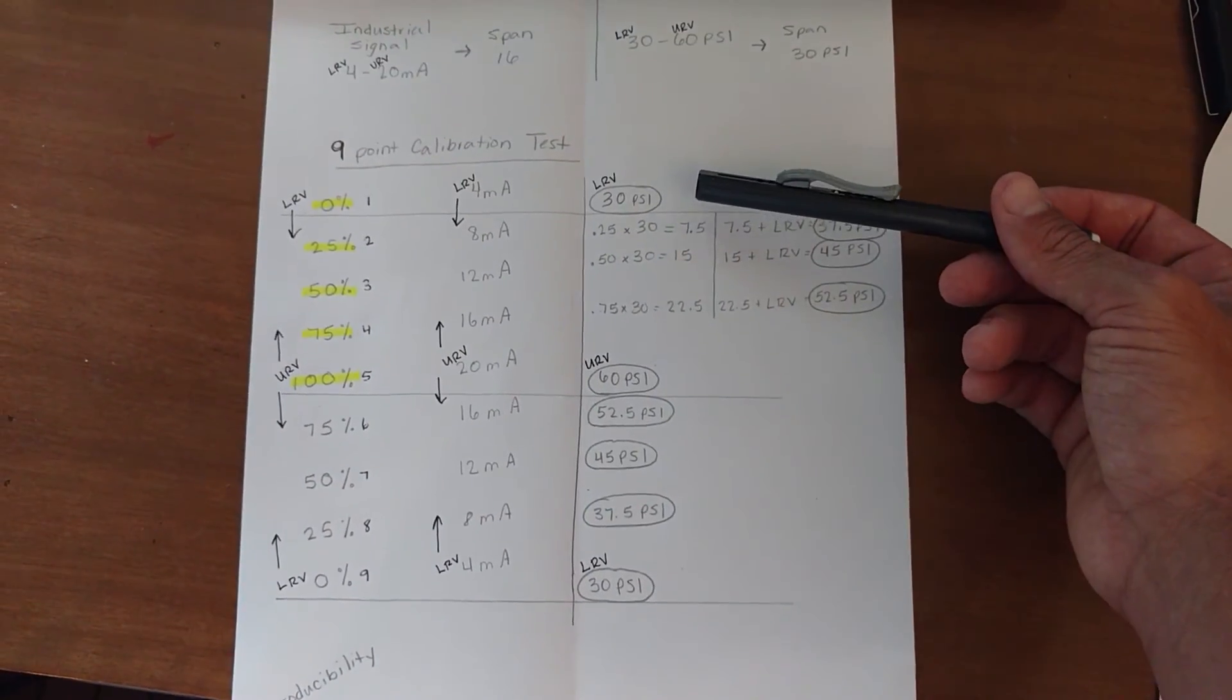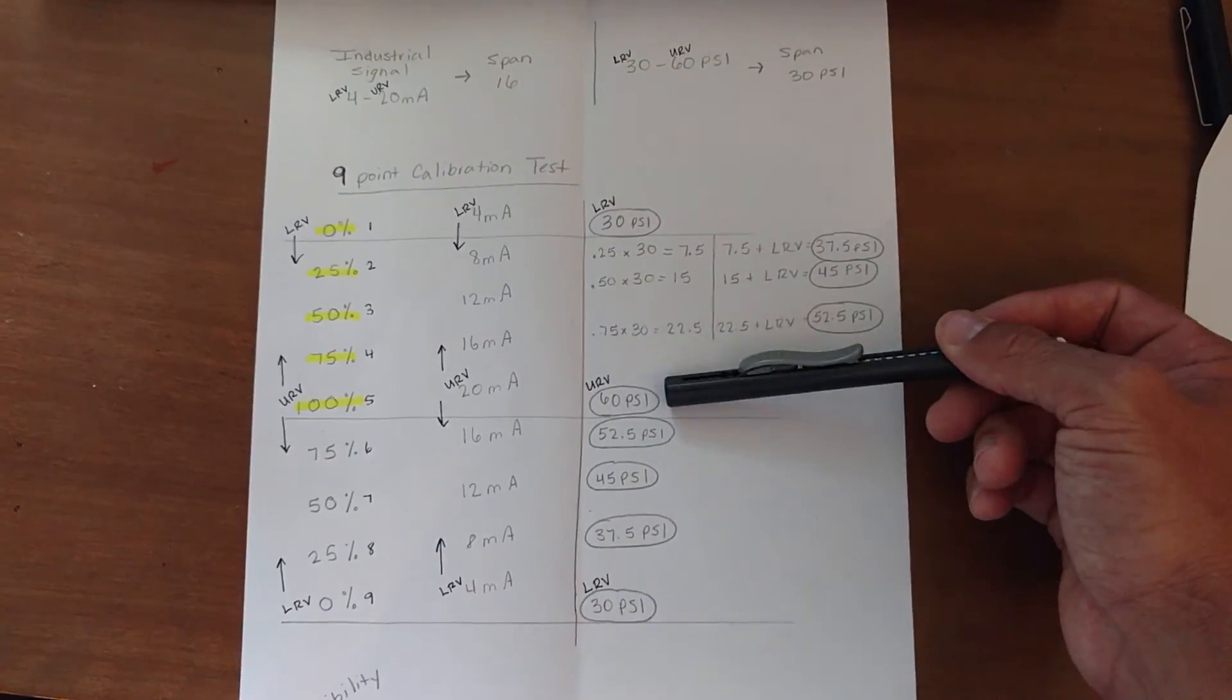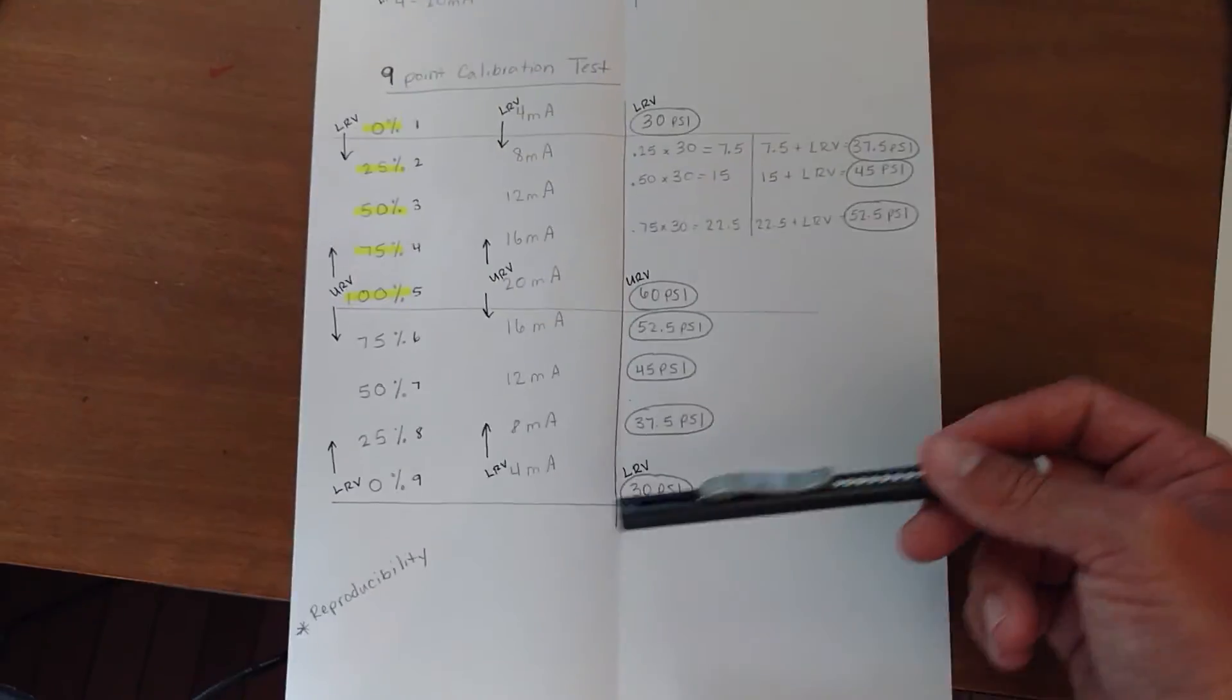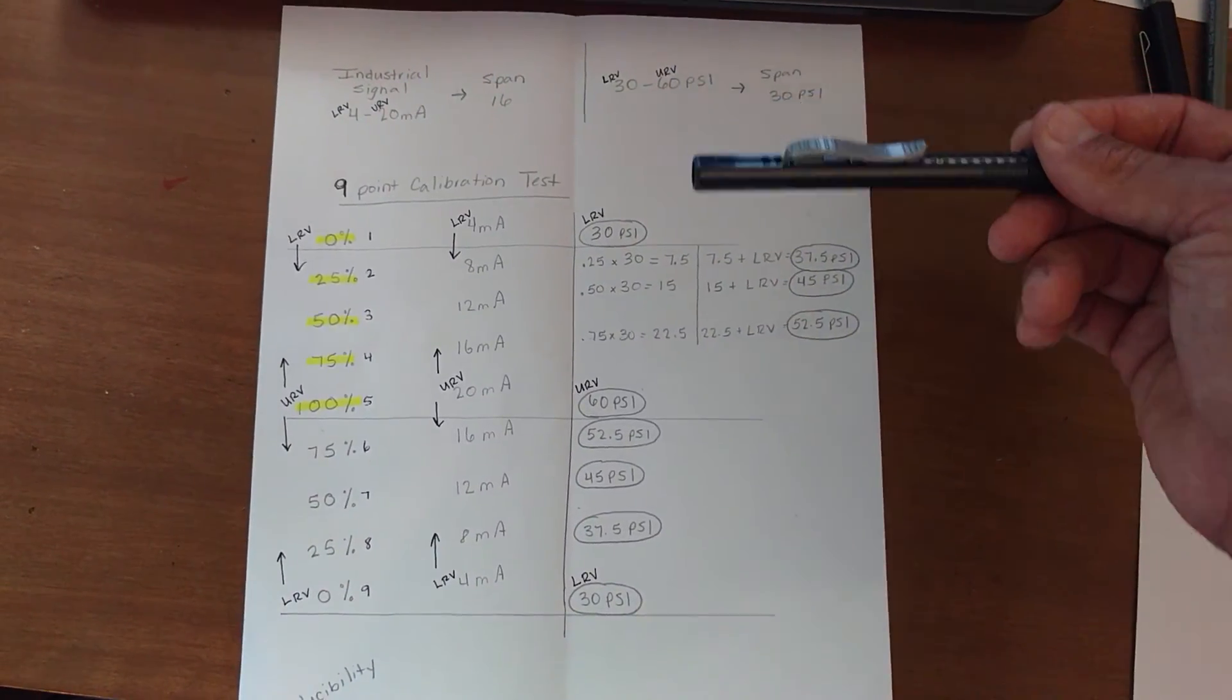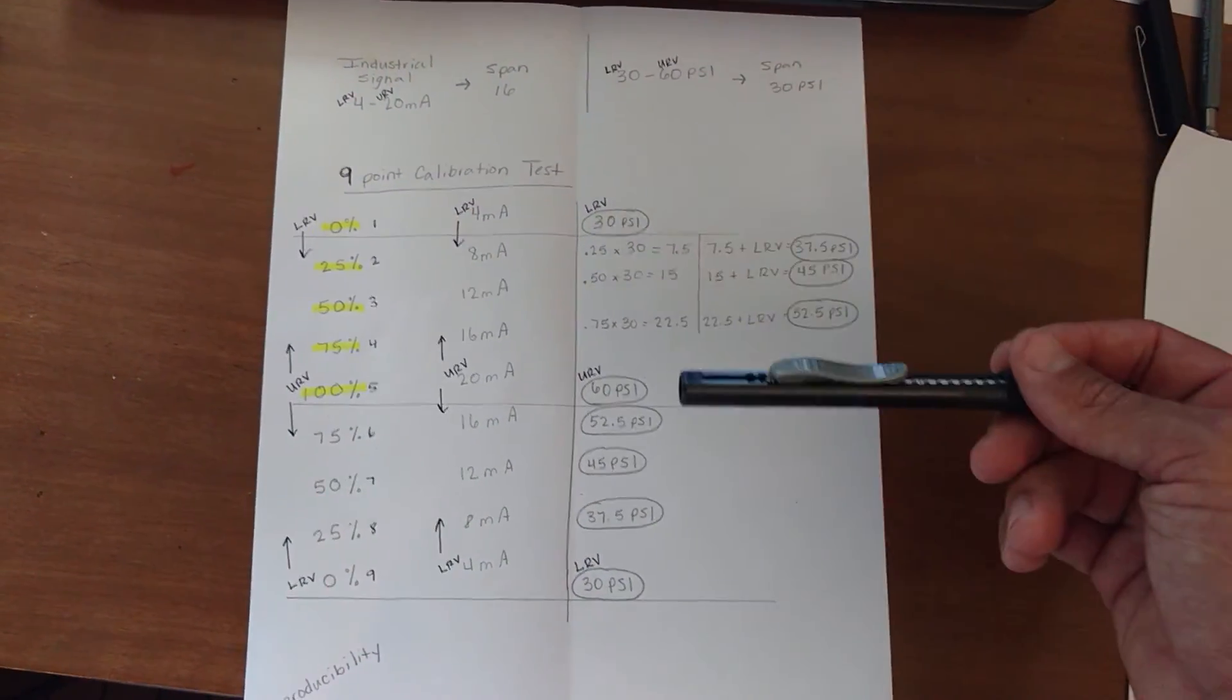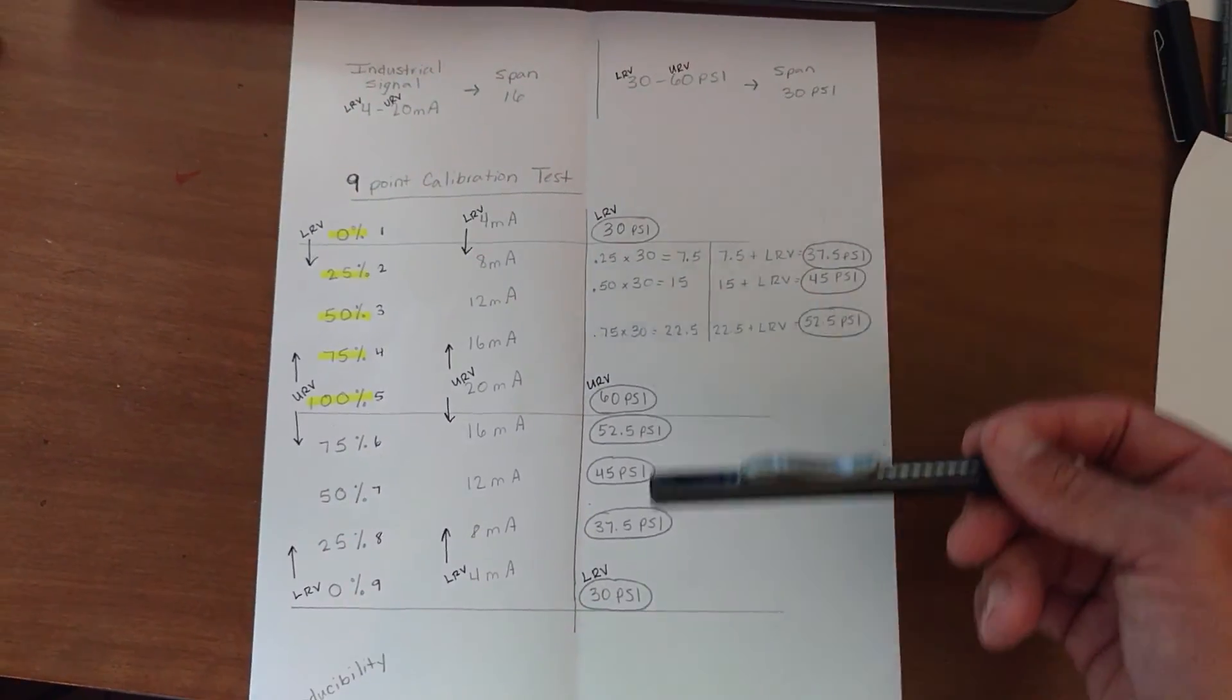And the reason we do 0 to 100%, and then 100% back down to 0%, is because of reproducibility. This is making sure that our transmitter works on the way up, when it's increasing its signal, and then when it's decreasing its signal.